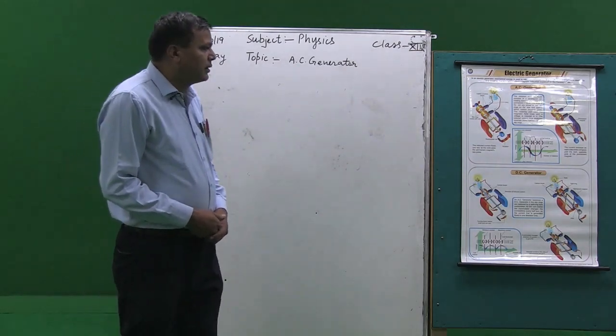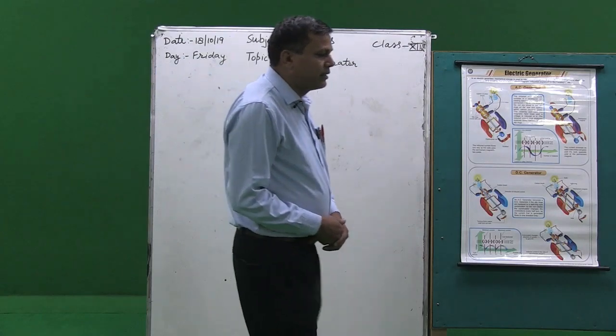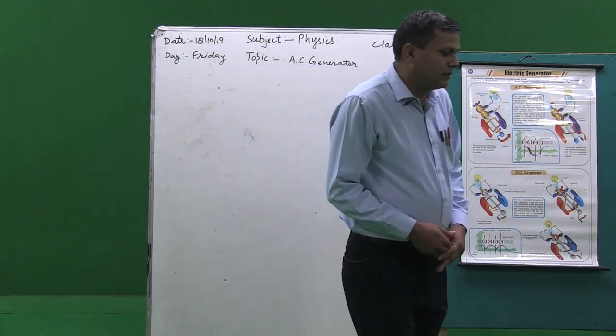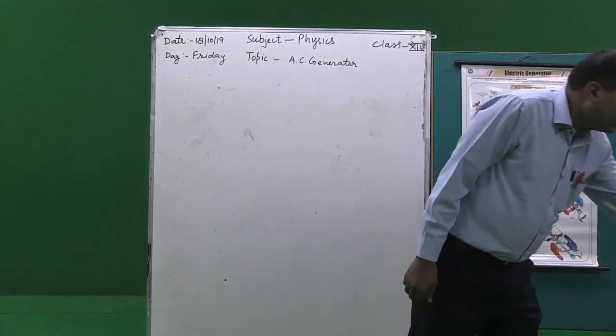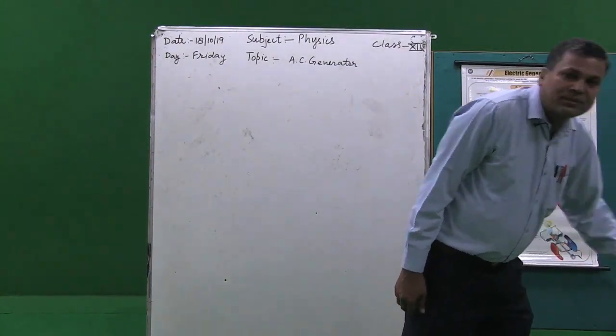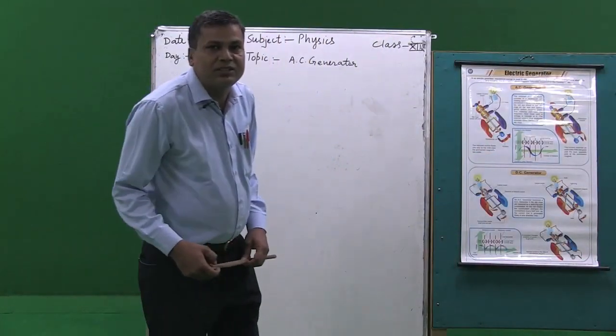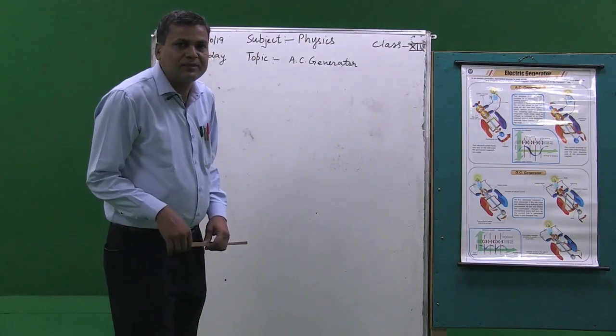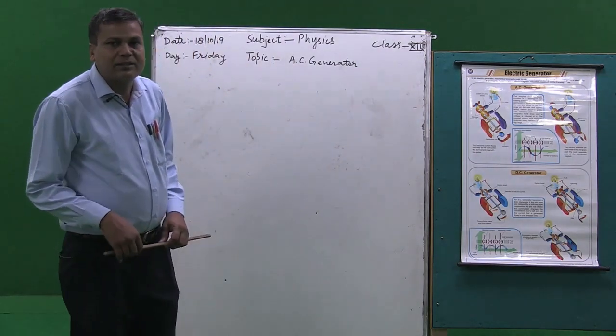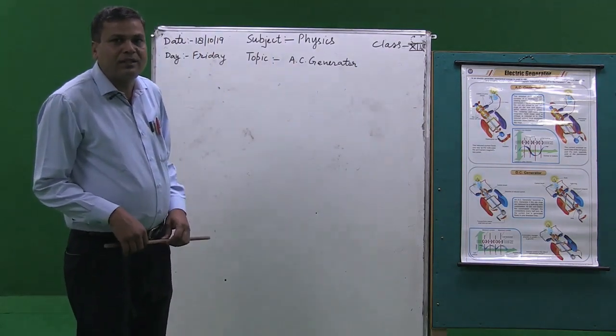Generally, AC generators are of two types: the AC generator and the DC generator. We will discuss the AC generator.